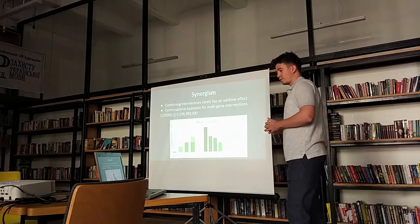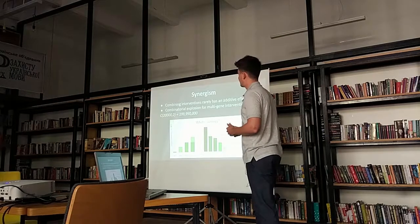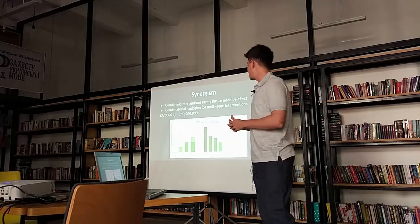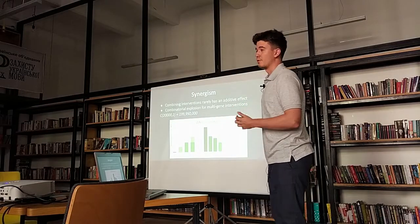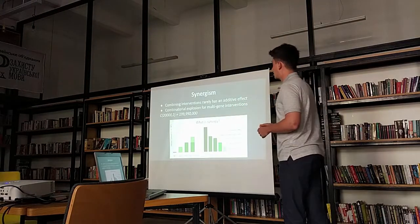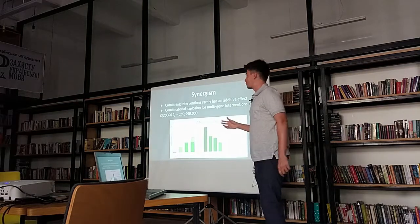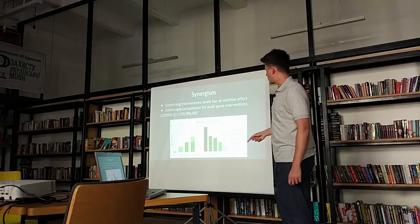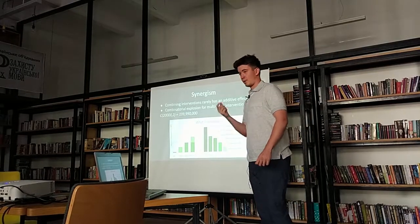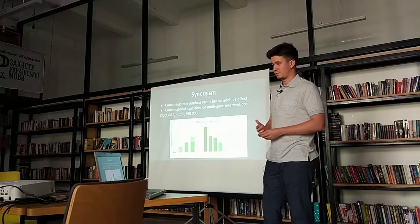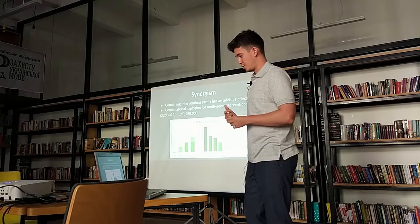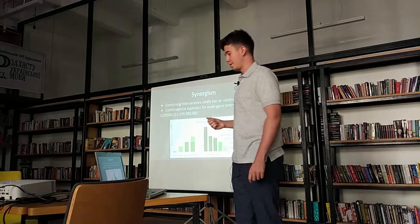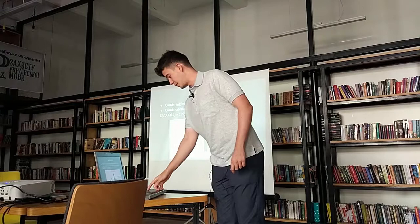Predicting synergistic interventions is important because if you count the number of combinations of genes, the number explodes. A human genome has about 20,000 genes, and combinations of two genes gives about 200 million combinations — you can't check each one. You need ways to predict which combinations have a higher a priori chance of yielding synergistic effects.